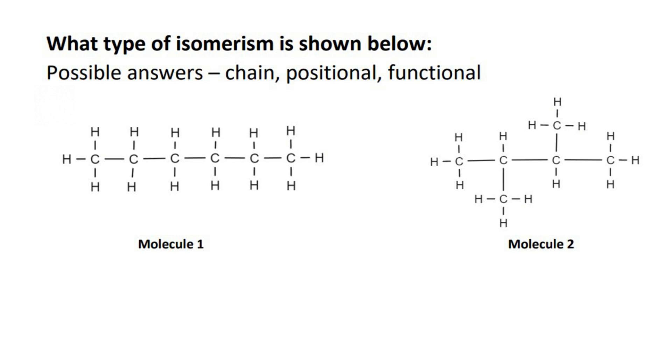So if you look on the left, there would be 1, 2, 3, 4, 5, 6 carbons. On the right hand side, there's 1, 2, 3, 4, 5, 6. Okay, so that's the same.